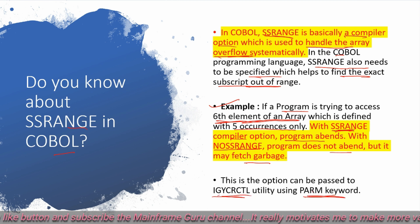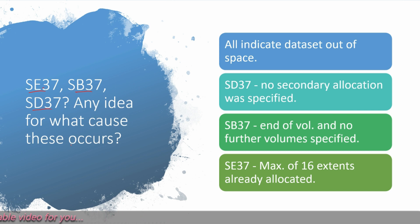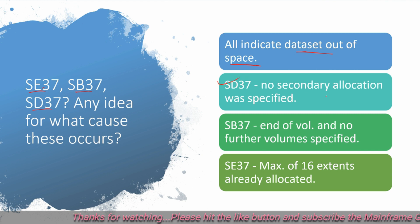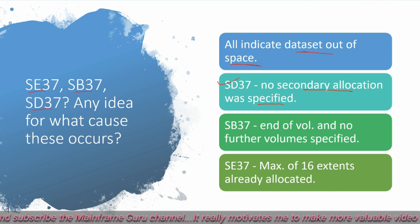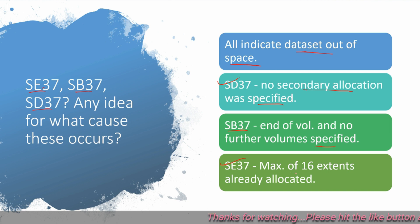What about SC37, SB37, and SD37? These abends all occur due to a dataset running out of space. For SD37, no secondary allocation was specified, or less secondary allocation was specified. SB37 arises when end of volume is reached and no further volume is specified for the dataset. SC37 means the maximum 16 extents are already allocated and no more extents can be allocated.